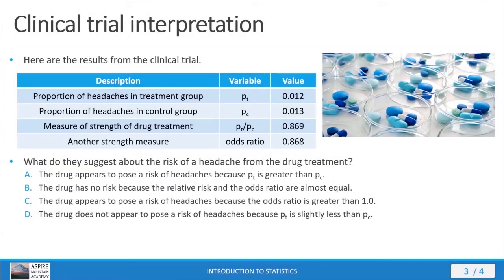The last part of this problem usually asks for some sort of real-world interpretation. Here in the table are the results from the clinical trial — the values we just calculated. The question asked is: what do these results suggest about the risk of a headache from the drug treatment? You're given four options. Option A: the drug appears to pose a risk of headaches because PT is greater than PC. Well, PT and PC are about the same value, and if anything PT is slightly lower than PC, so the treatment is not posing a risk of headaches. Answer A is out.